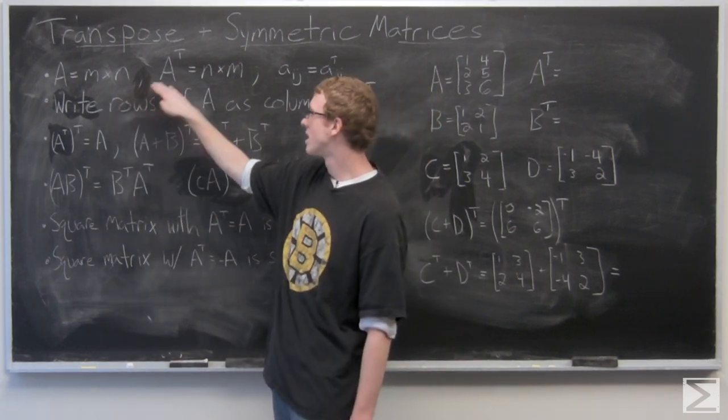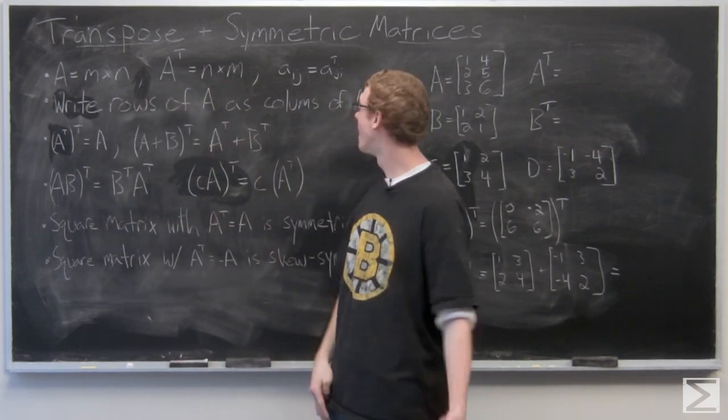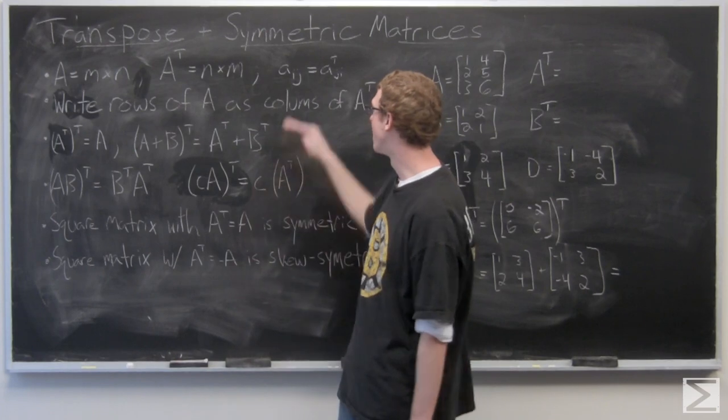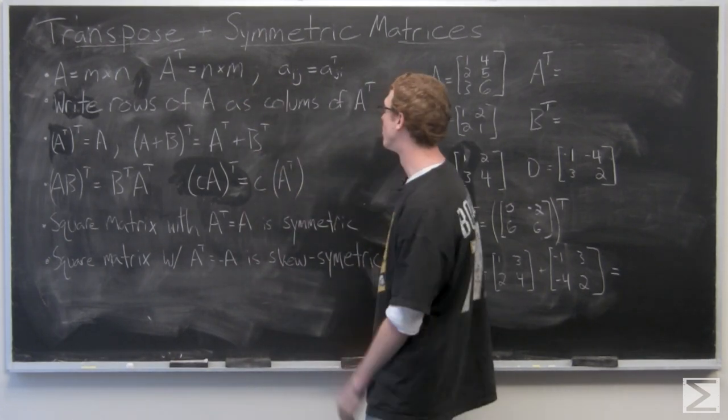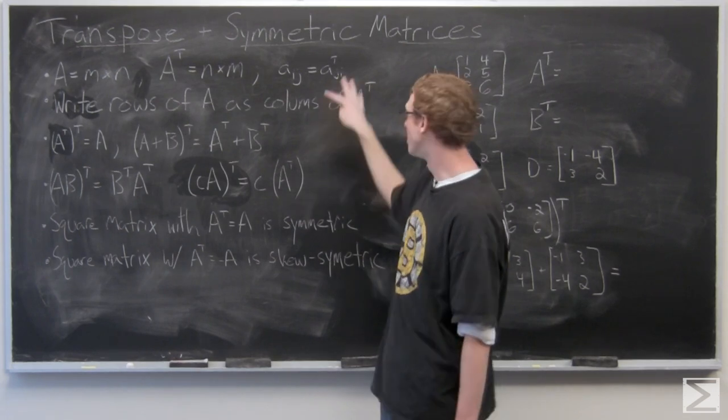In an M by N matrix, AT is going to be N by M, where you have the entries of A as AIJ are equal to the AJI entries of the transpose.